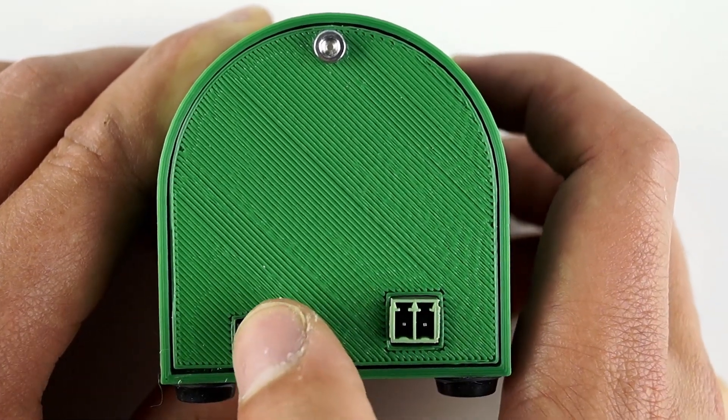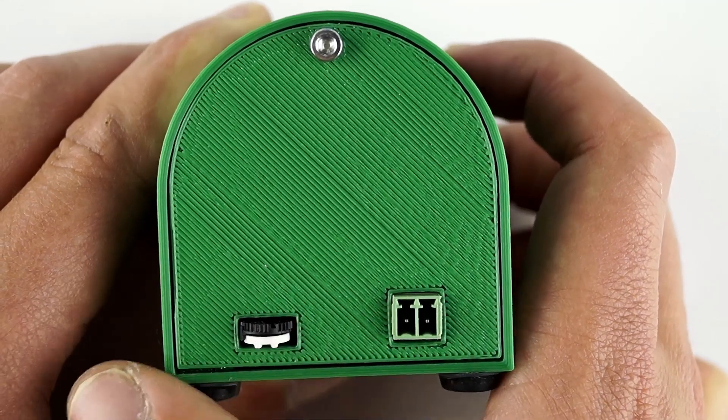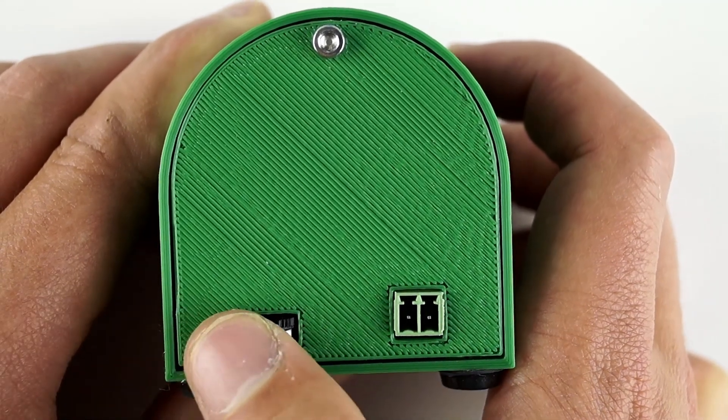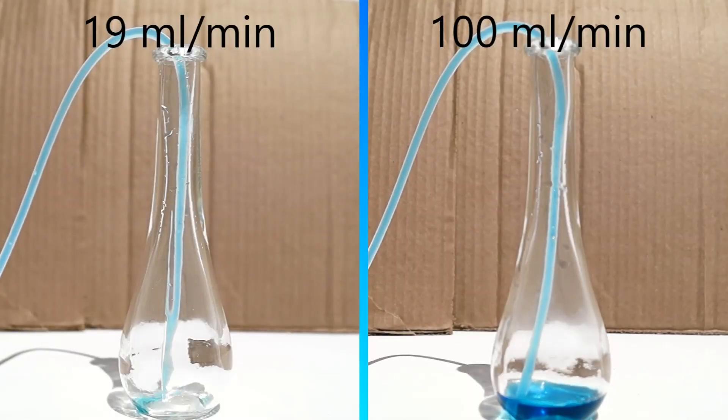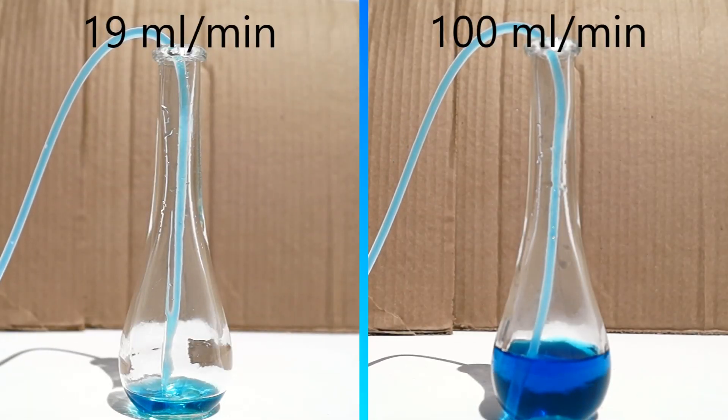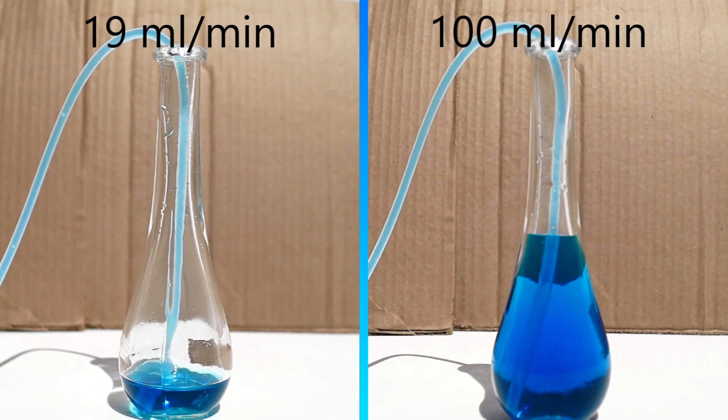You can adjust the flow rate by rotating the thumb dial. Sliding the dial to the left will decrease the rate of flow, while sliding it to the right will increase the rate. Based on your thumb dial setting, your pump can flow between 19 and 100 milliliters per minute.